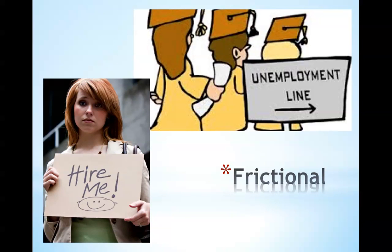There are three different types of unemployment. The first type is called frictional unemployment. Frictionally unemployed people are those who are temporarily between jobs. This includes people searching for jobs right after college, people who are trying to find a new job after being fired, people who may have quit one job and searched for another, etc. It is important to note that frictional unemployment always exists.